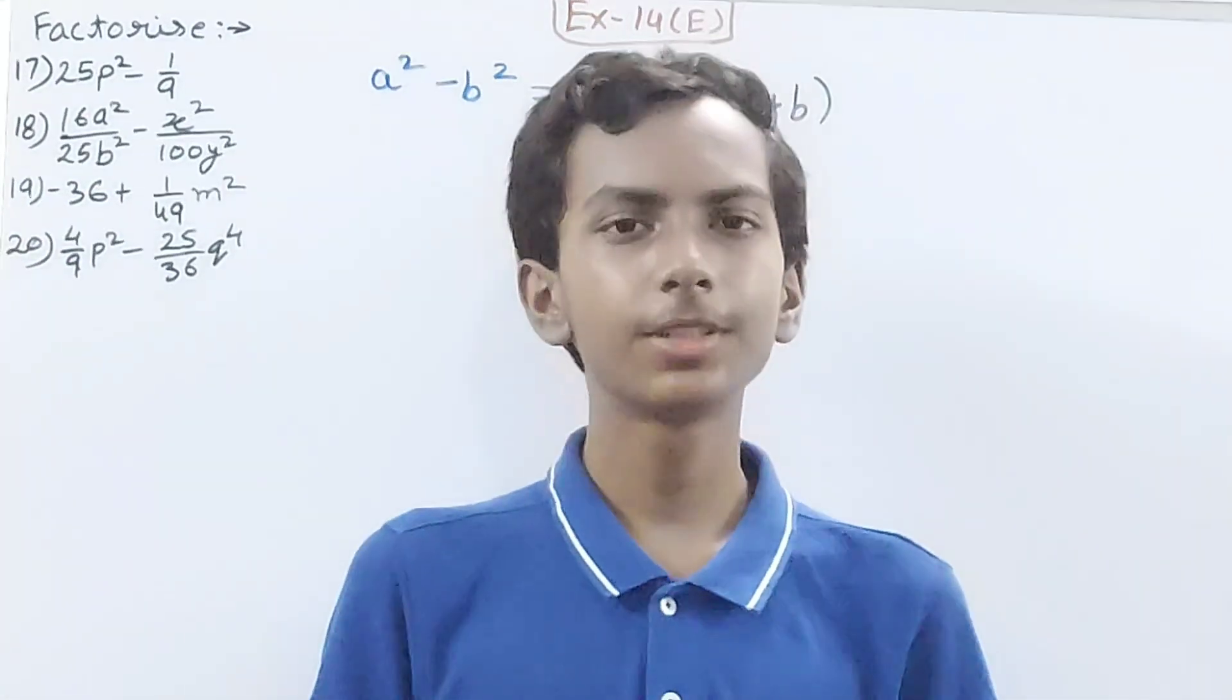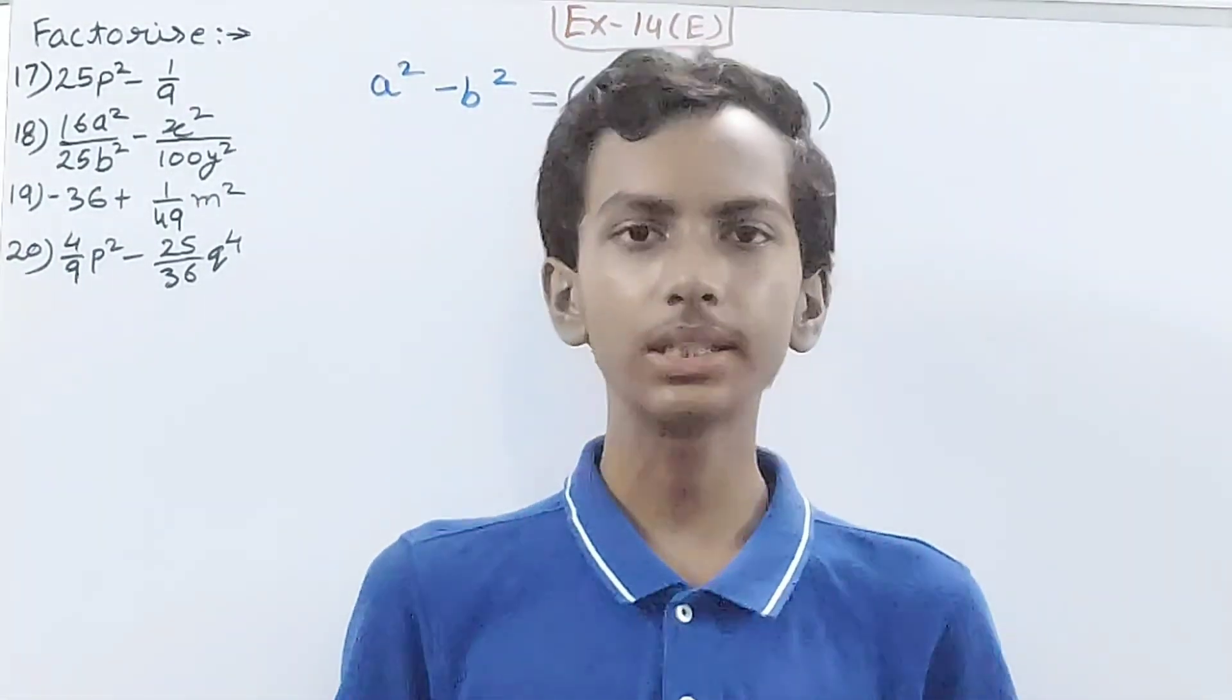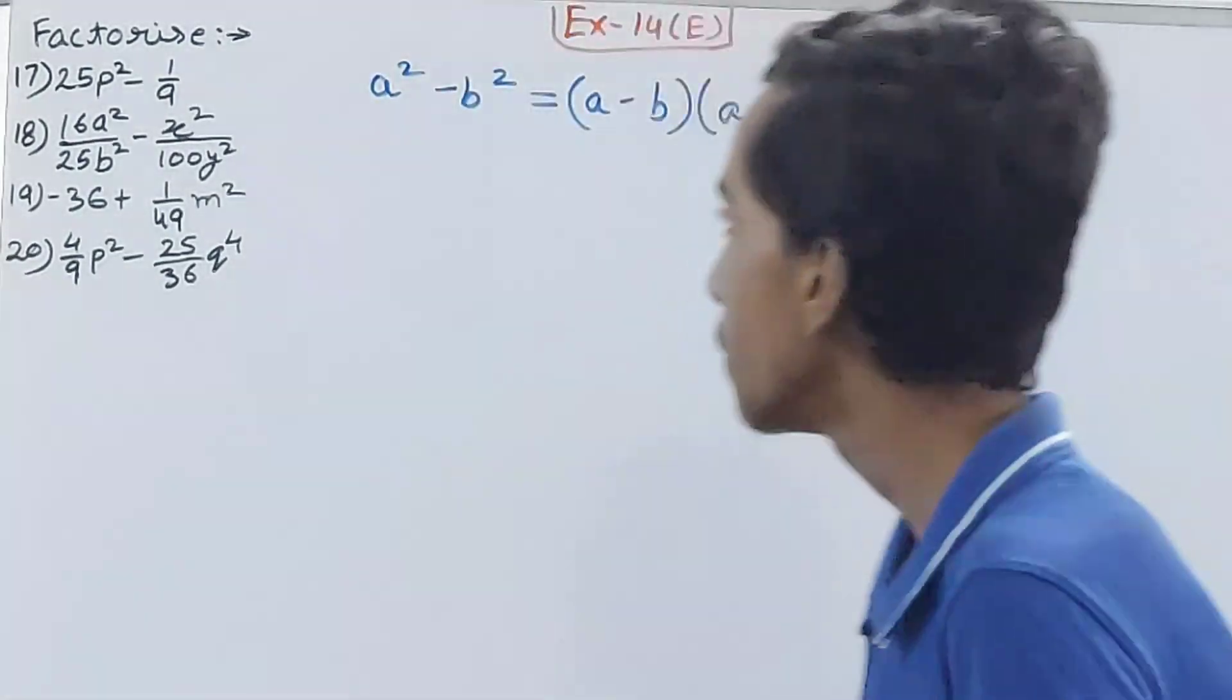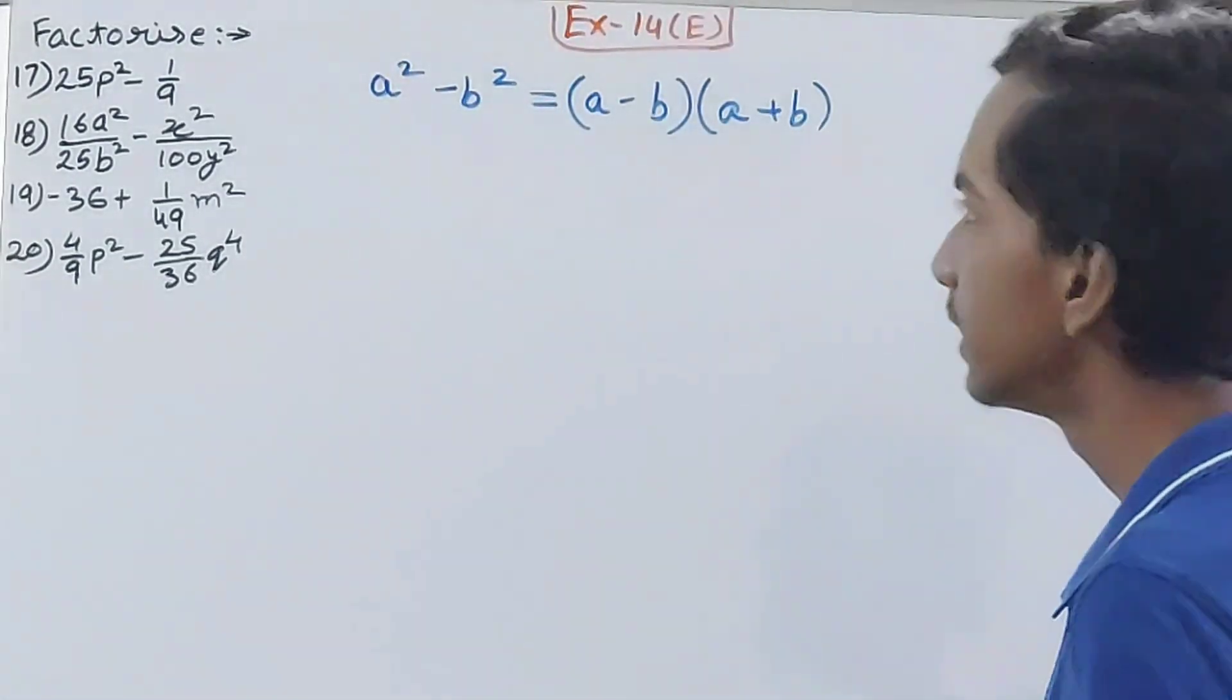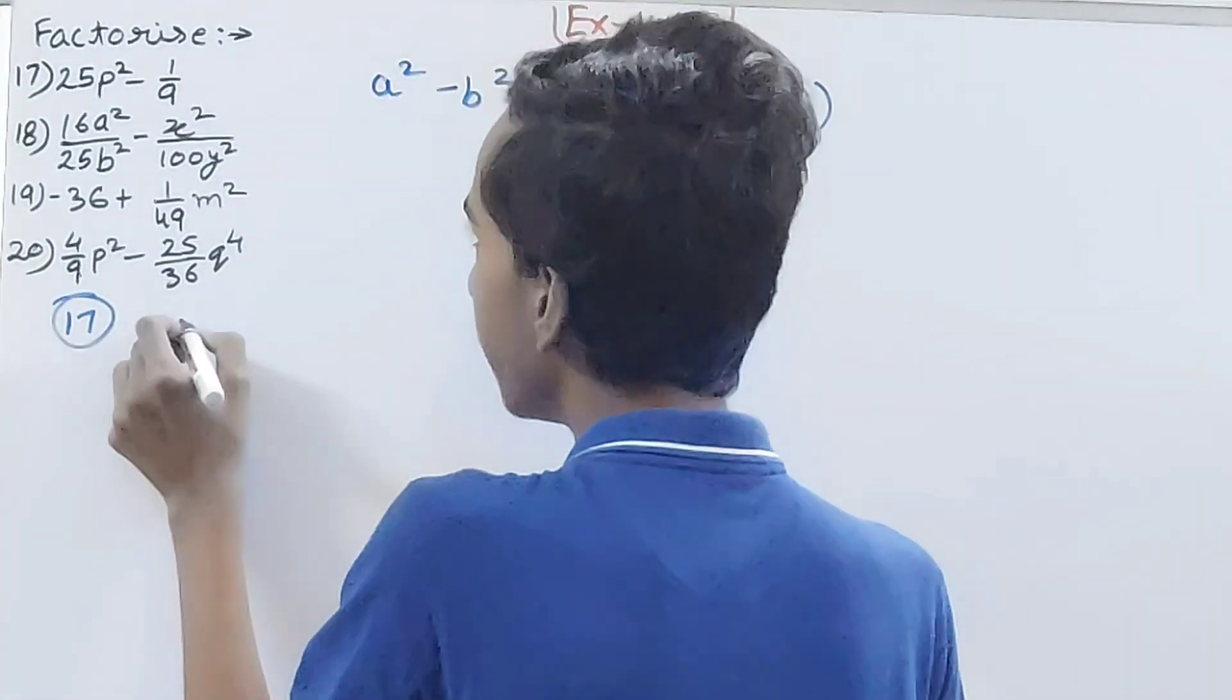Hello friends, welcome back to my YouTube channel, I Love Your Learning. In this video we are going to solve ICAG Mathematics Class 8, Chapter 14 Factorization, Exercise 14, equations 17 to 20. See the 17th question, we have 25p² minus 1/9.